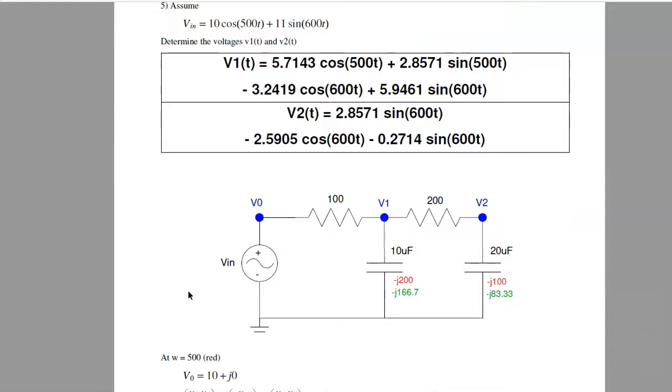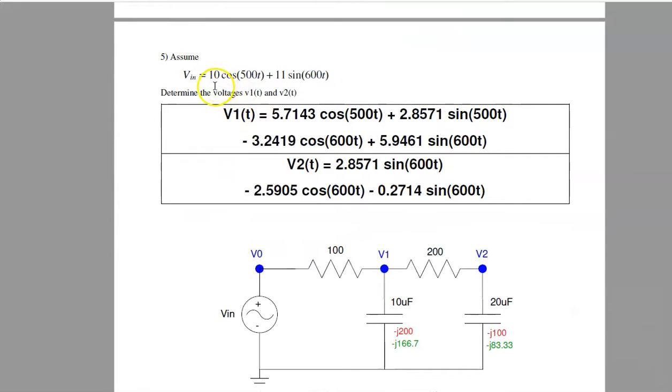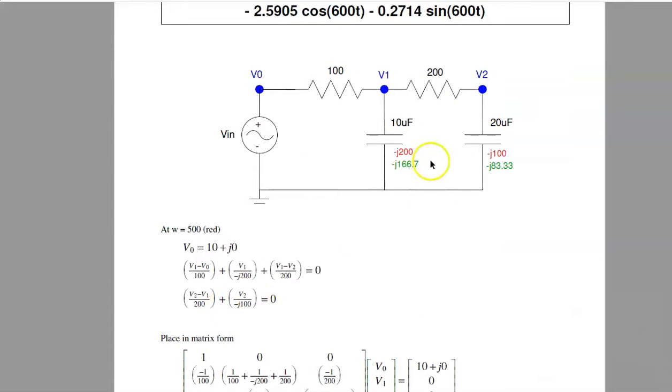Problem 5 is the same thing, only twice as hard, because they have two frequencies. Treat that as two separate problems, one where the input is 10 cosine 500t, a second problem when the input is 11 sine 600t. Now to solve the first one, this is in red, find the impedances at 500 radians per second. That's minus J200, minus J100, and the input is 10 plus J0.